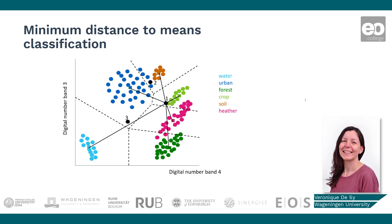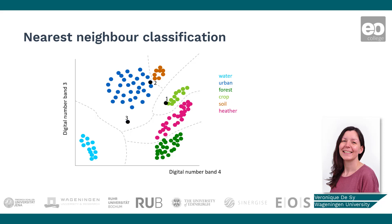With the nearest neighbor classification, a new unlabeled pixel is assigned to the class most common among its k nearest neighbors. K stands for the number of neighbors that are considered. If k is 1, then the pixel is simply assigned to the class of that single nearest neighbor. Pixel 1 and 3 in our example on the slide are again assigned to the crop and the urban class, but pixel 2 will now be assigned to the urban class based on this classification algorithm. This illustrates that choosing a different classification algorithm might result in a differently classified map.